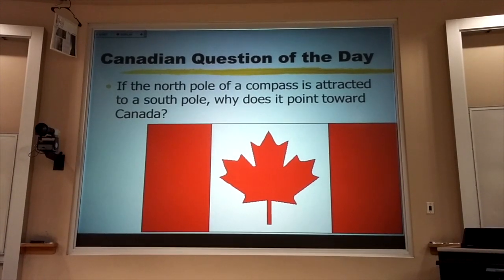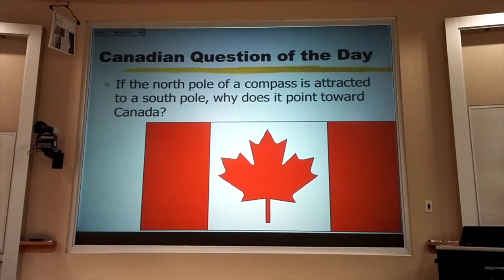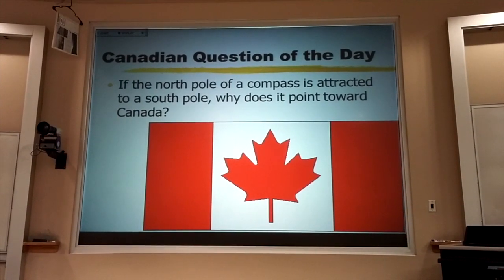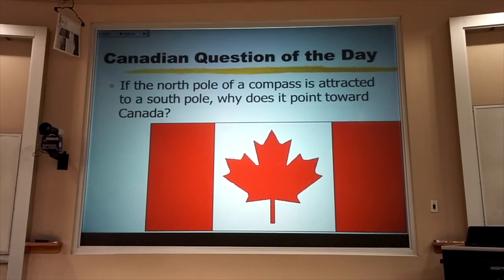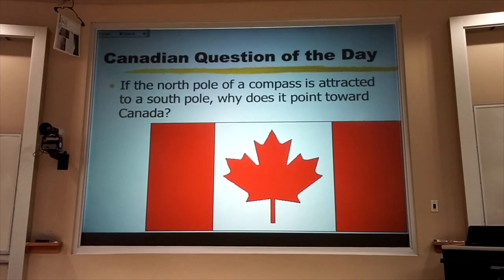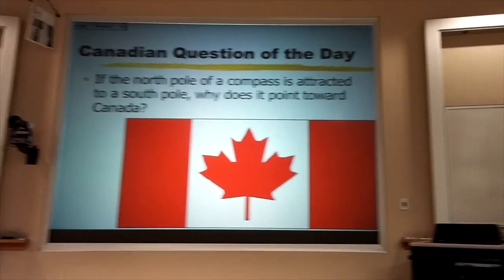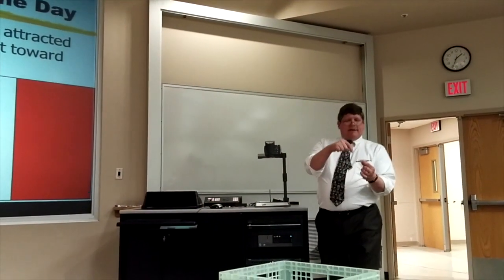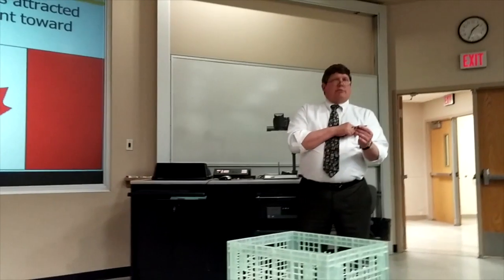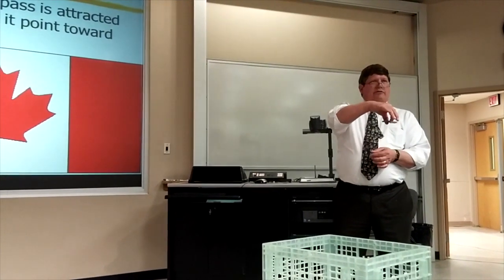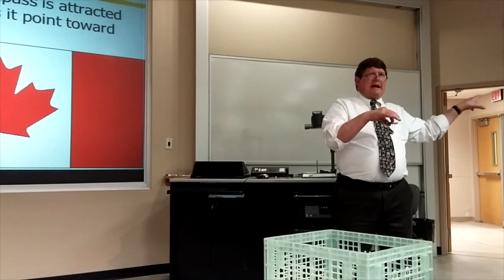Actually, it turns out that any bar magnet that I have with an N on it is going to attract the south, the part that points towards Mexico. In other words, if I were to take a bar magnet that had an N and an S on it, the red part being usually red, and I were to hang it from a string so that it could pivot, the N part is going to point towards Canada.